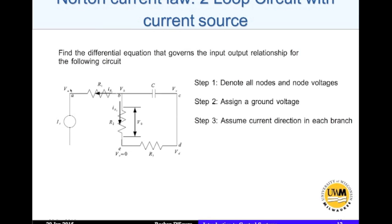Same thing with IR2, current through R2. So we are assuming that VB is at a greater potential than VE. And current through the capacitor IC, again assuming that VB is greater than VC. Now this current is the same that flows through R3 too. It's the same current.